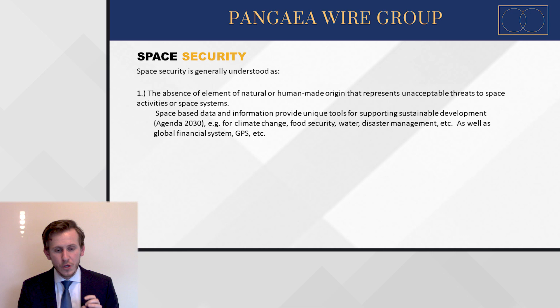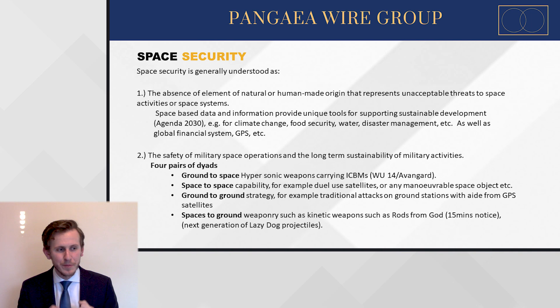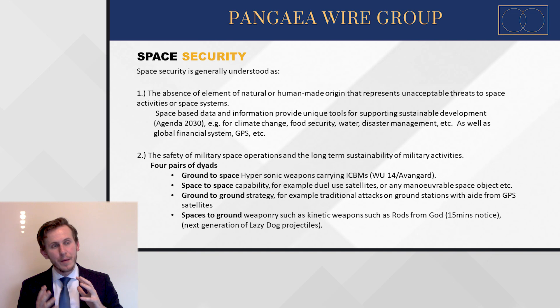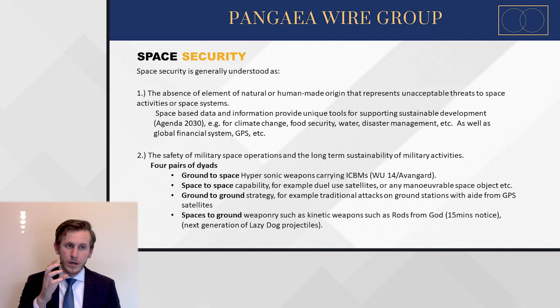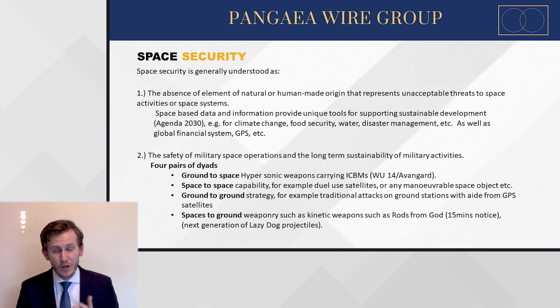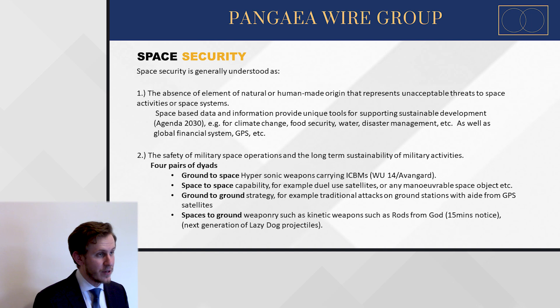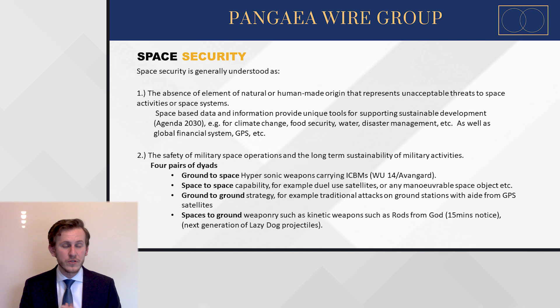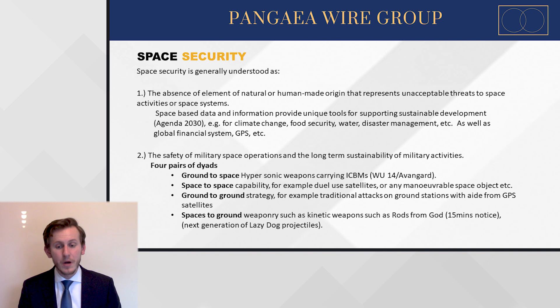The second aspect is the safe use of space for military purposes. There are four pairs of ways the military field interacts with space. First, ground-to-space operations, which include ASATs and hypersonic weapons — weapons faster than the speed of sound carrying ICBMs — including the Chinese WU-14 and the Russian Avangard, which can travel at roughly 20 to 27 Mach, meaning 20 to 27 times faster than the speed of sound.